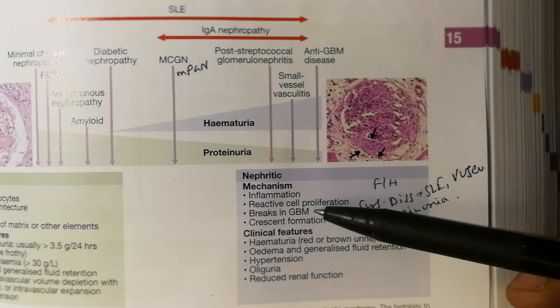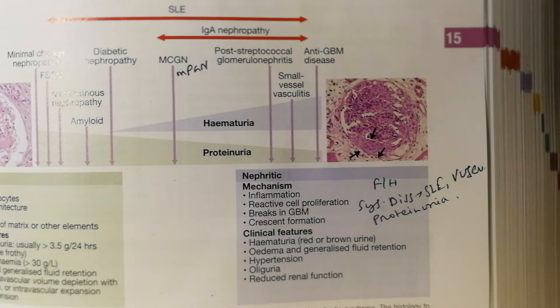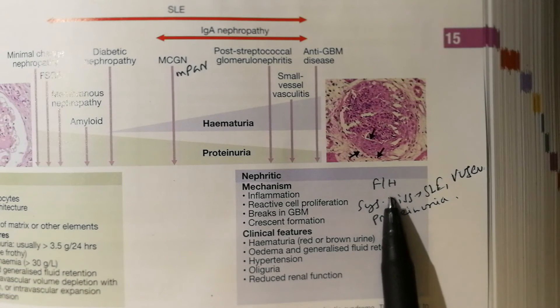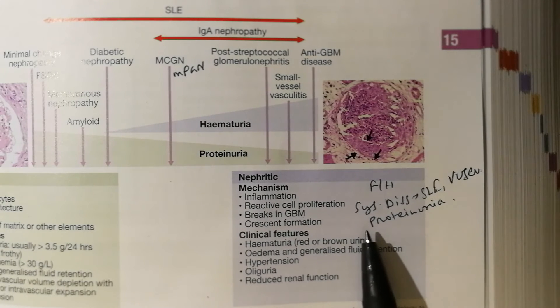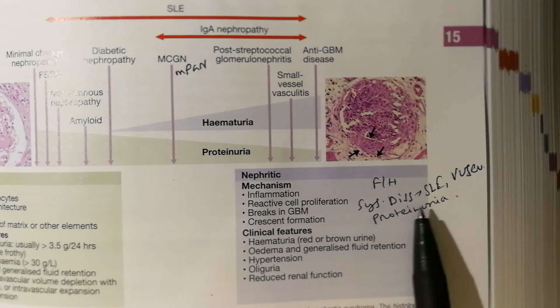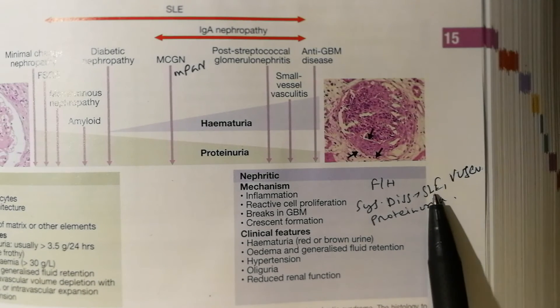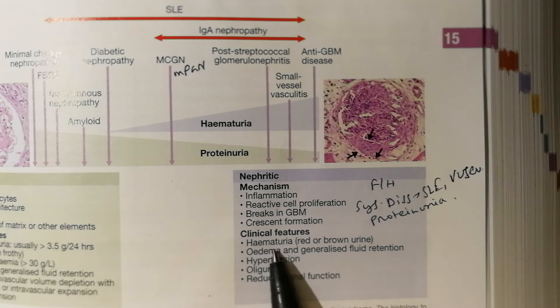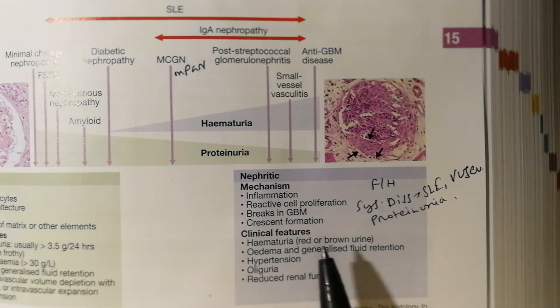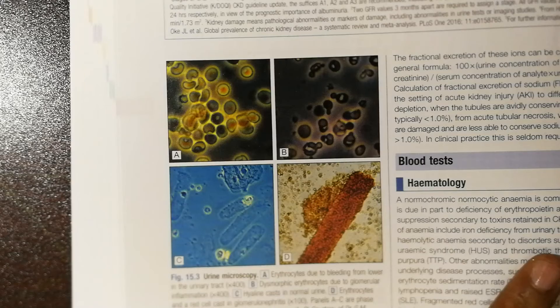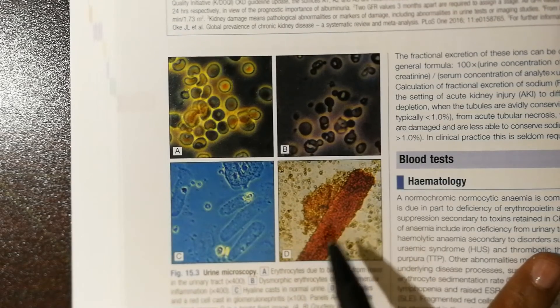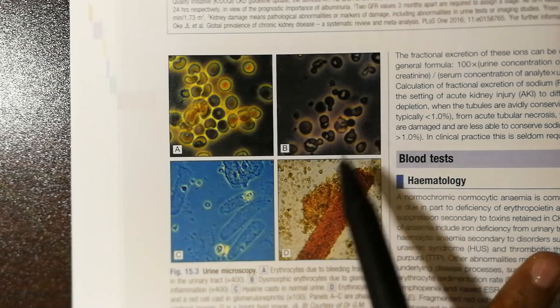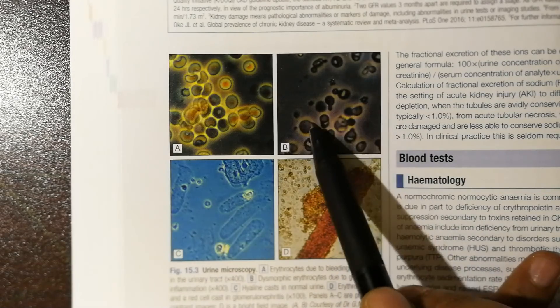Nephritic syndrome is associated with inflammation and breaks in the glomerular basement membrane that lead to hematuria. Take family history from the patient of renal disease and systemic disease such as SLE and vasculitis. Hematuria with RBC casts indicates glomerulonephritis, and dysmorphic RBCs in phase contrast image are associated with glomerulonephritis.